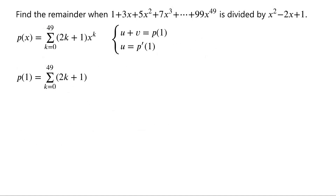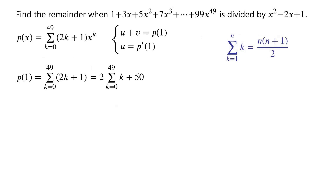P of 1 equals the sum from k equals 0 to 49 of (2k plus 1), which can be written as 2 times the sum from k equals 0 to 49 of k, plus 50. We know that the sum from k equals 1 to n of k equals n times (n plus 1) over 2. So the sum from k equals 0 to 49 of k equals 49 times 50 over 2. Therefore P of 1 equals 49 times 50 plus 50, which equals 50 times 50, which is 2500.